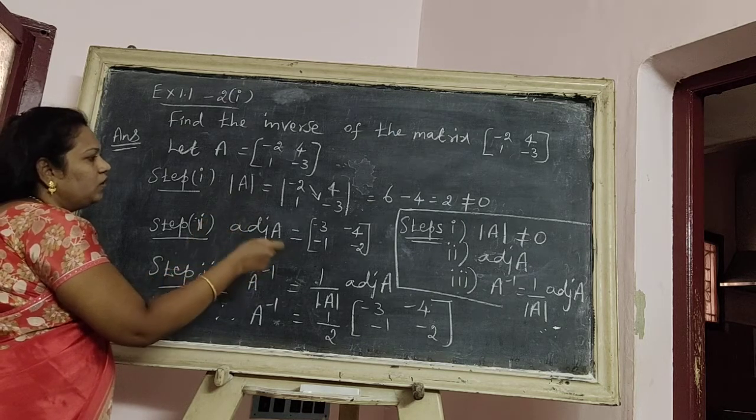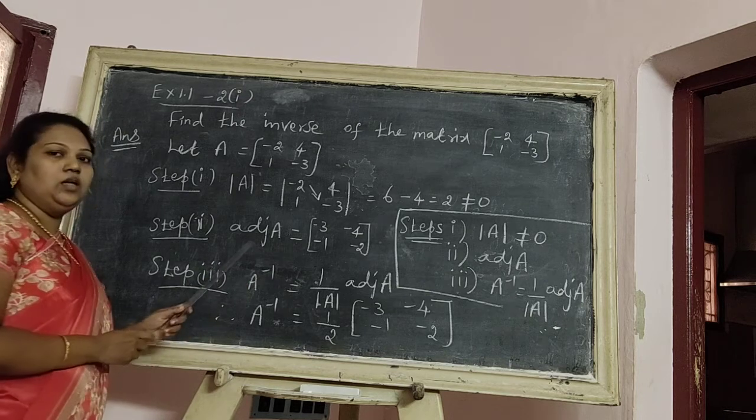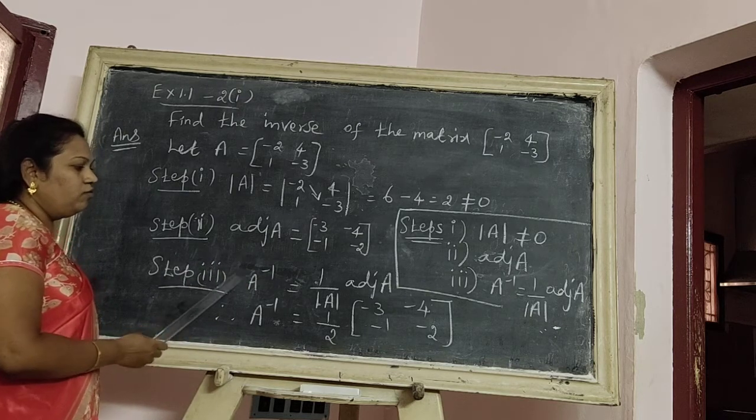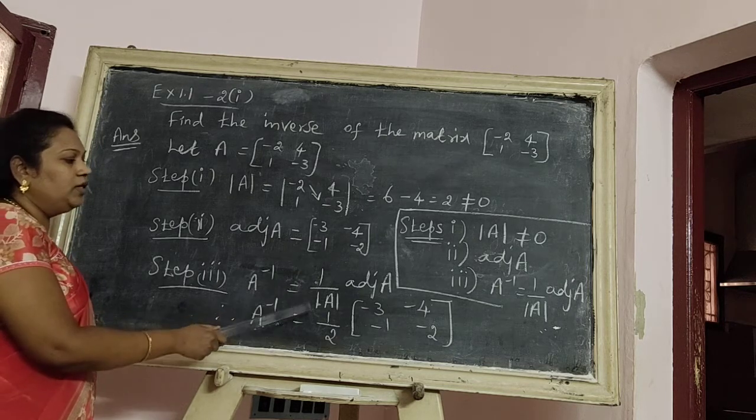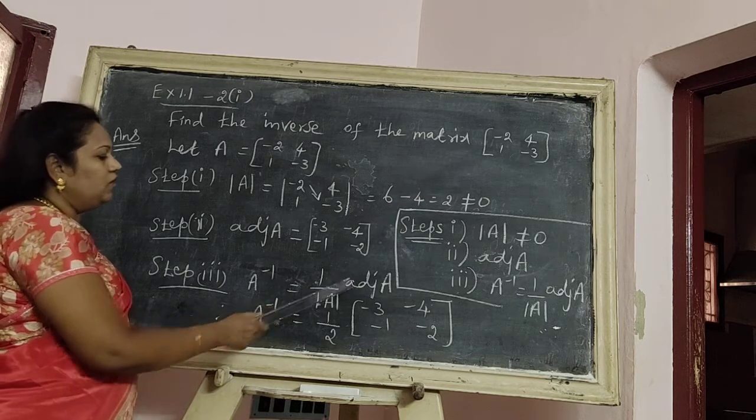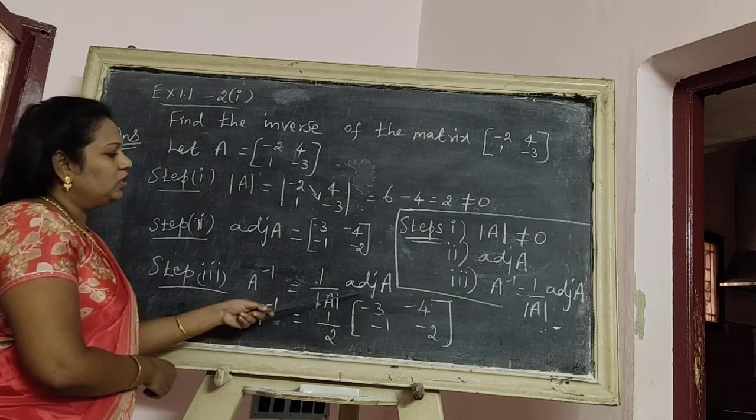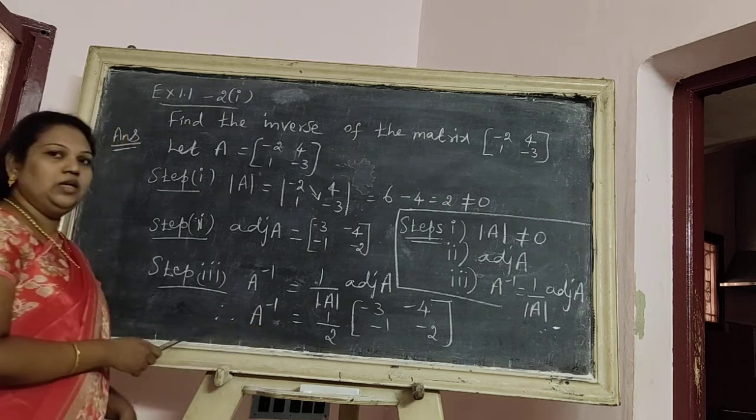A inverse equal to 1 by determinant A into adjoint A. Then we substitute here, determinant A is 2. Then substitute here, adjoint A value. Therefore, we get the answer.